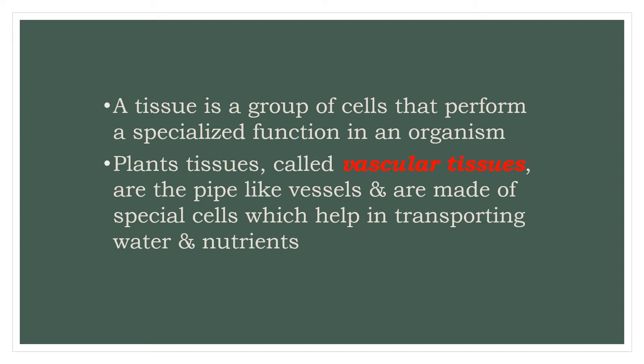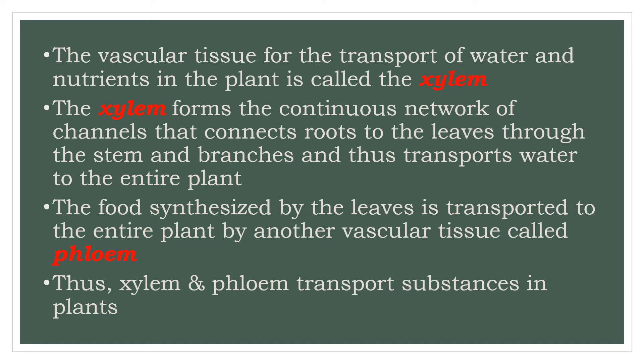Plant tissues called vascular tissues are pipe-like vessels made up of special cells which help in transporting water and nutrients. The vascular tissue for the transport of water and nutrients in the plant is called the xylem. The xylem forms a continuous network of channels that connects roots to the leaves through the stem and branches, and thus transports water to the entire plant. The food synthesized by the leaves is transported to the entire plant by another vascular tissue called the phloem. The xylem and phloem transport substances in plants.